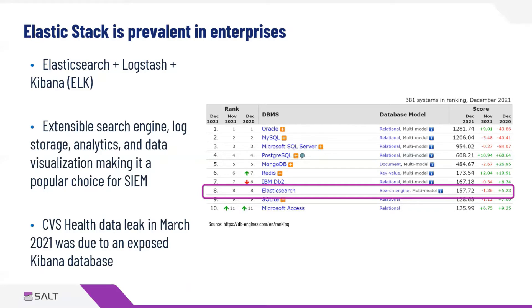As an example of the prevalence of Elastic and how it can lead to data exposures: the company CVS Health experienced a data leak in March 2021. Some of that data was actually an exposed Kibana database. If you look at some of the screenshots, you'll see Kibana metadata identifiers that really highlight that it was, in fact, a Kibana database.